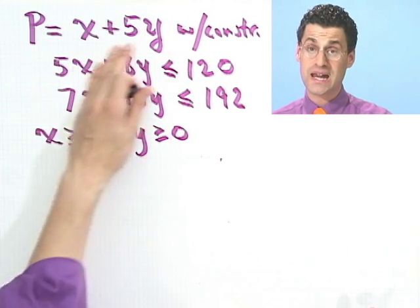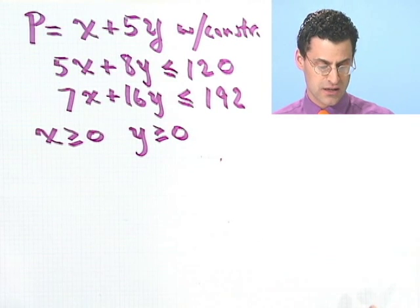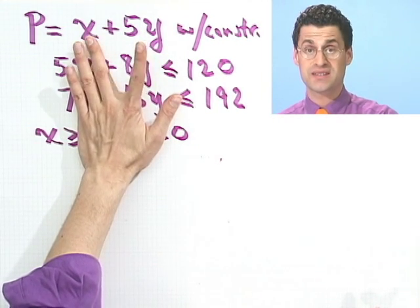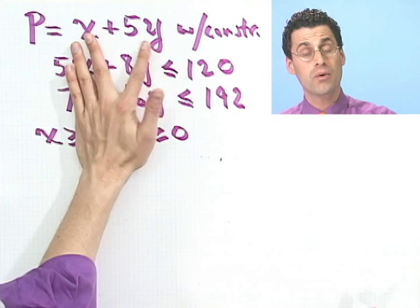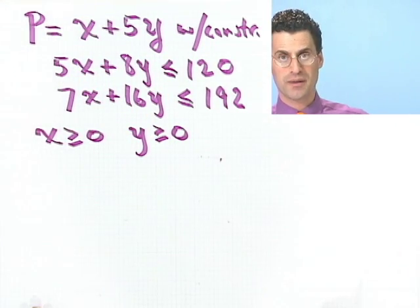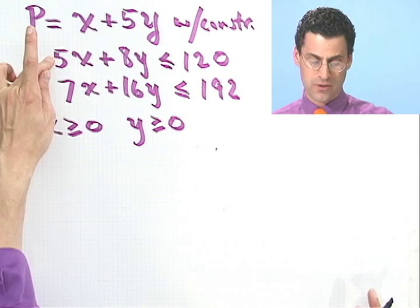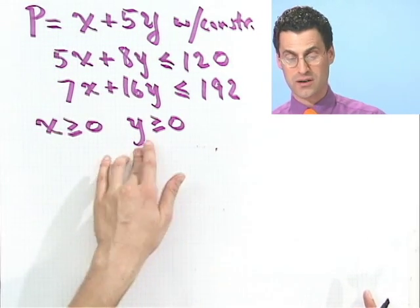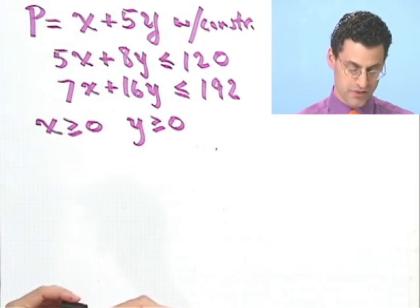Now with all these constraints, the question is, what are the values for x and y that make this as big as possible? Well, I'm going to tell you how this works using linear programming. In fact, the first thing you have to do is graph this region and see what this region looks like. A lot of inequalities that need to be graphed. So let's get going.